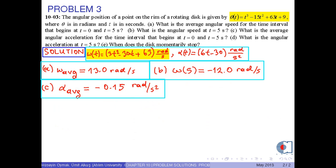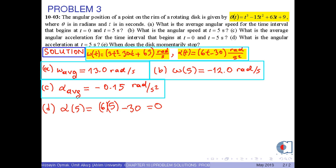In part d, to find the angular acceleration, we use the alpha formula. That is, alpha(5) equals 6 times 5 seconds minus 30, which results in 0 angular acceleration at time 5 seconds.